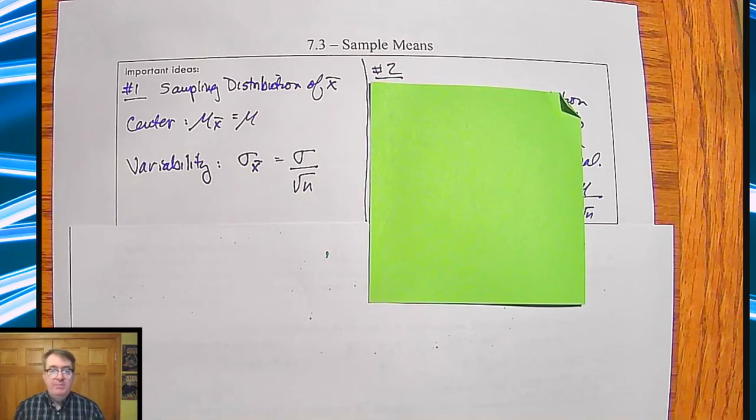Welcome back. We're talking about sample means here, we were talking about the heights of 50 students in downstate Illinois. And so we're going to formalize this a bit so we can hopefully then use it more consistently with what's going on.